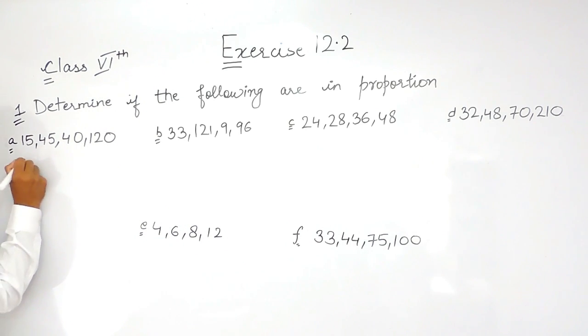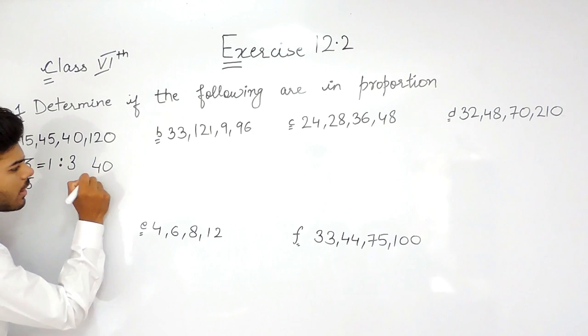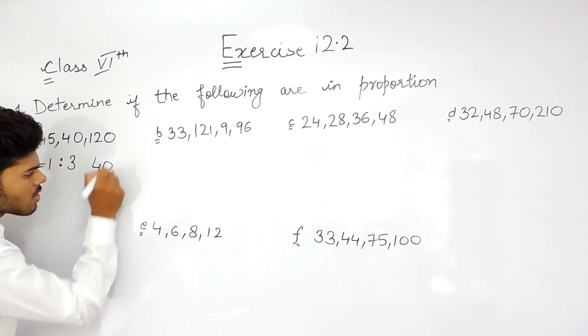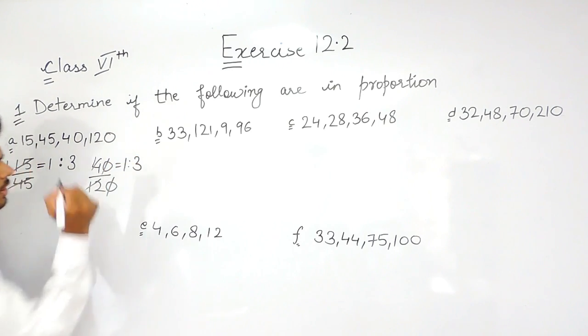So we will check this out. The ratio of first two numbers is 15 upon 45, that equals 1 times 15, 3 times 15, which is 1 ratio 3. And the ratio of 40 and 120 will be again 1 ratio 3. That means they are in proportion.